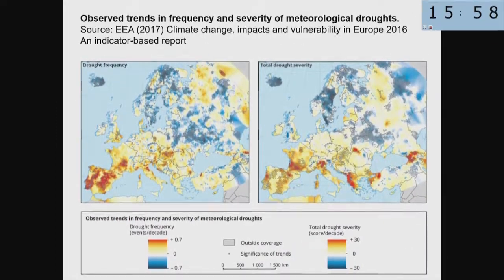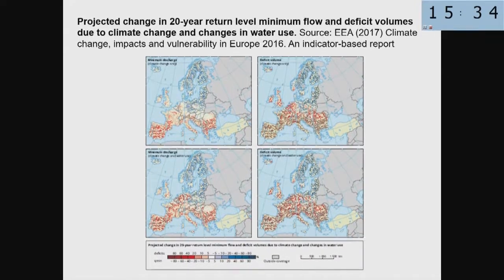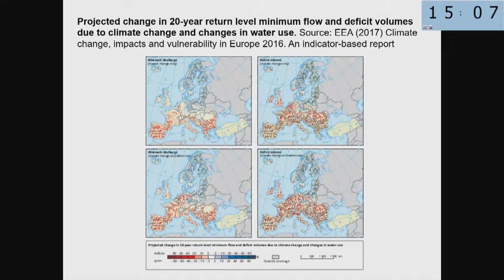A product of the EEA, the European Environment Agency, shows changes in observed frequency and severity of meteorological droughts, where red areas represent changes for worse — meaning stronger, more severe, and more frequent drought events. Projections for the future show a 20-year return level of minimum river flow and deficit volumes. Not good news for much of Europe, not only the Mediterranean but also Central Europe, with better news for the north and Scandinavian countries.